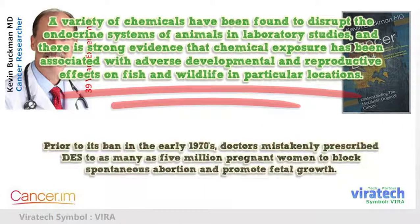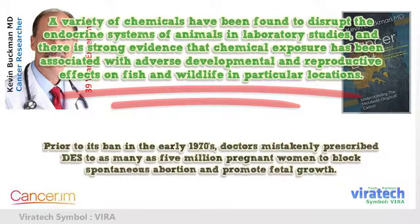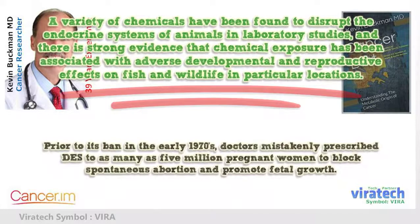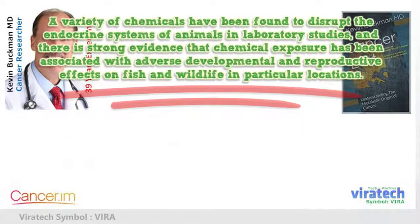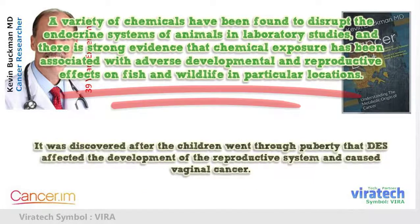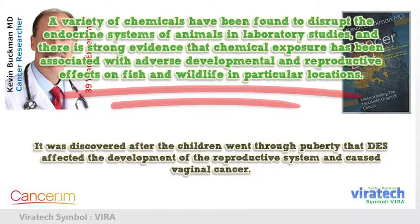Prior to its ban in the early 1970s, doctors mistakenly prescribed DES to as many as 5 million pregnant women to block spontaneous abortion and promote fetal growth. It was discovered after the children went through puberty that DES affected the development of the reproductive system and caused vaginal cancer.